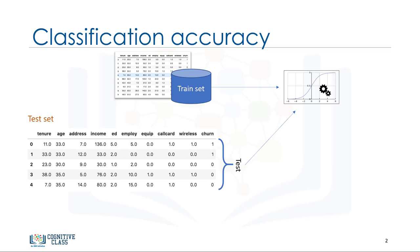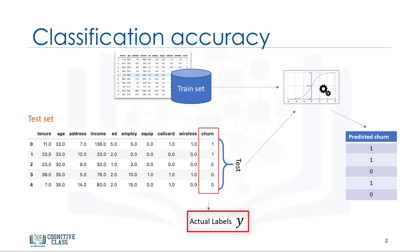We pass the test set to our model and we find the predicted labels. Now the question is, how accurate is this model? Basically, we compare the actual values in the test set with the values predicted by the model to calculate the accuracy of the model. Evaluation metrics provide a key role in the development of a model as they provide insight to areas that might require improvement. There are different model evaluation metrics, but we just talk about three of them here.